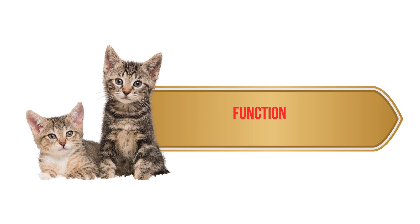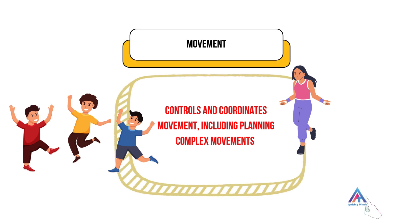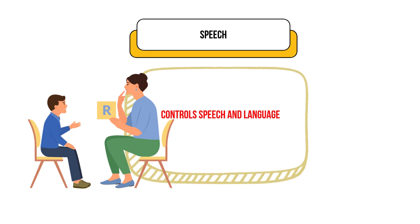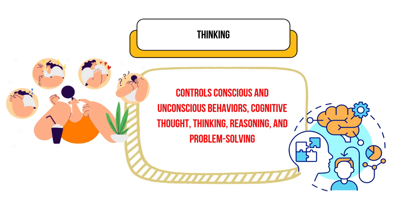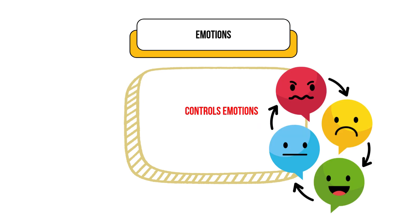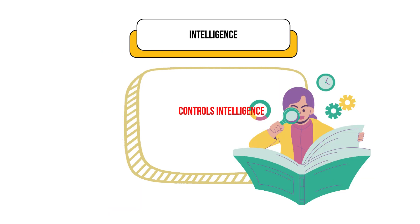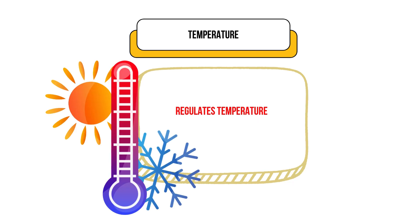Let's discuss the functions of the cerebrum. The cerebrum controls and coordinates movement, including planning complex movements. It regulates vision, hearing, touch, and other senses. It helps control speech and language, controls conscious and unconscious behaviours, cognitive thought, thinking, reasoning and problem solving. It controls emotions, memory, and intelligence, and regulates temperature.